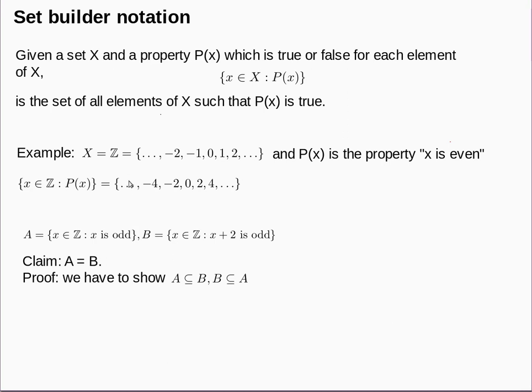There's another notation for specifying sets called set builder notation. To talk about it, I need to introduce the idea of properties of things. A property is something which might be true or false for a given thing. Given a set X and a property P which applies to elements of X, we use set builder notation to mean the set of all things in X such that that property is true.